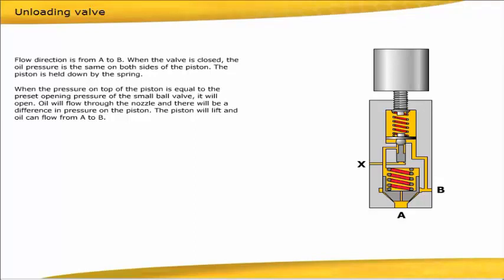Oil can flow from A to B. When the ball valve has opened, it will remain open until pressure in port X is lower than the opening pressure of the ball valve.